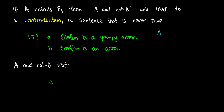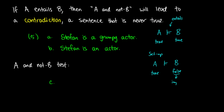What we know is that if A entails B — and this is the sign for entails — then if A is true, B must be true. What we're going to do is assume that A entails B, make A true, but make B false, and show that this is impossible. If this is impossible, it means B must be true, and we have an entailment relationship.